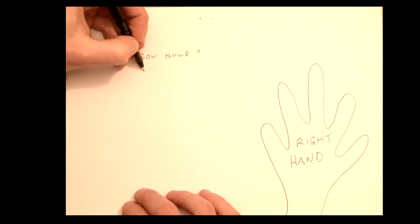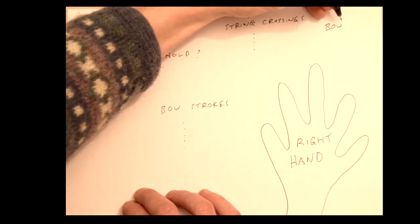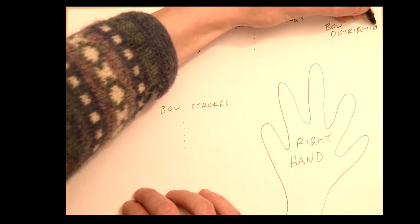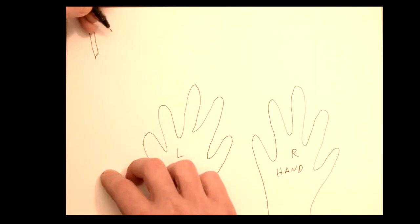And if we jump now to techniques used by the right hand, what are the points for bow hold, bow strokes, string crossings, bow distribution? This is all the kind of info we need to gather to help us train.